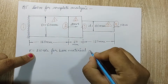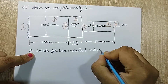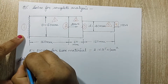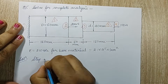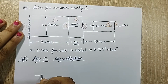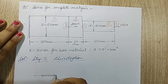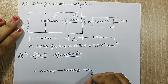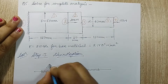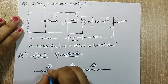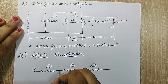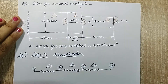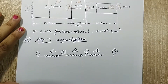210 GPa is going to be 2.1 × 10⁵ N/mm². Now I will start with the solution. Step 1 is discretization — I will be drawing my elements. Element 1 is between node 1 and 2, element 2 is between node 2 and 3, and the third element is between node 3 and 4. So there are four nodes overall.